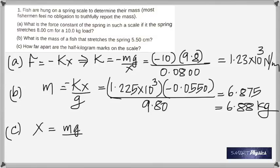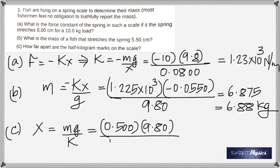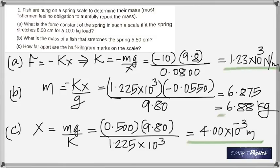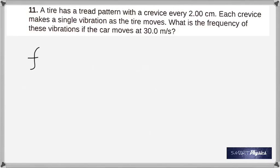Multiply by 0.0550 divided by 9.8, which gives you 6.875, which rounds to 6.88 kilograms. For part C: how far apart are the half kilogram marks on the scale? That means what is the distance between the marks for each half kilogram. Make X the subject: mass is 0.5 kilogram times 9.80 divided by K before rounding off, and you get 4.00 times 10 to the negative 3 meters.